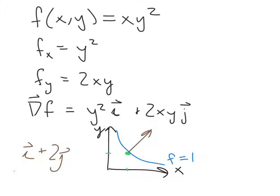The direction I drew is not quite right — let me fix that. I should be going over 1, up 2, maybe it's more like that. This was a straightforward method for finding a vector perpendicular to a particular curve at a spot. We made up a function of two variables so that the curve of interest was a level curve of that function, and then we used the gradient to find the perpendicular.